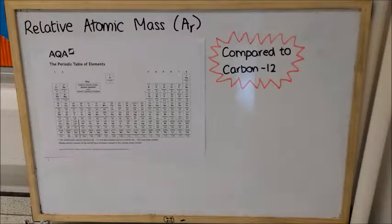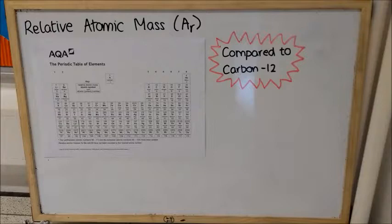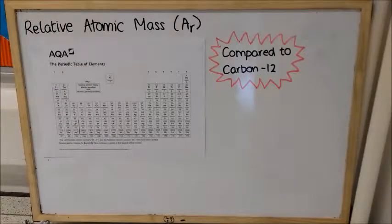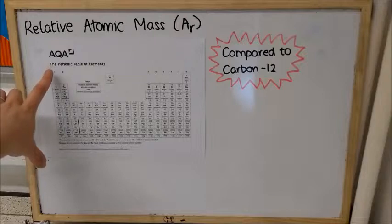In order to be able to calculate relative formula mass, you already need to be happy and confident with what's meant by relative atomic mass. So the relative atomic mass is the larger of the two numbers that you find on the periodic table. So on this AQA-GCC periodic table, you'll see this little key here.